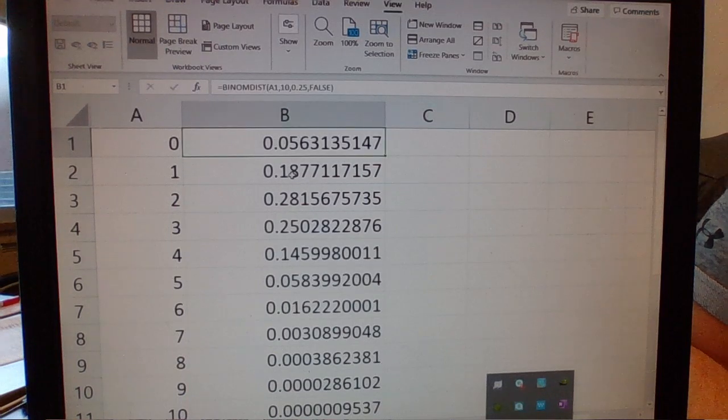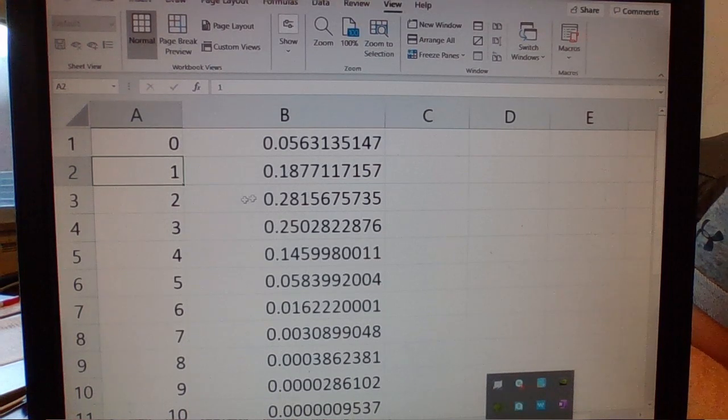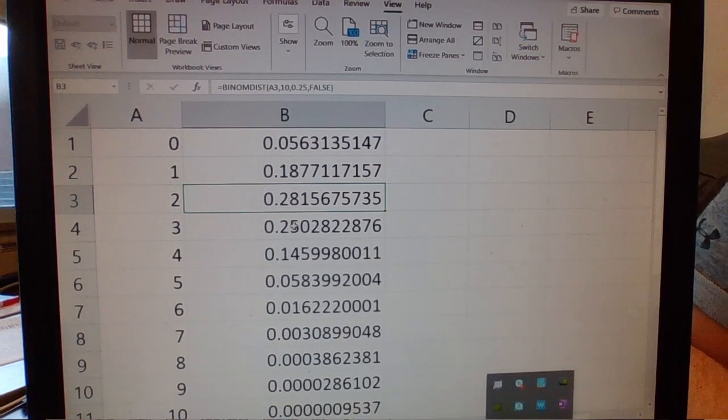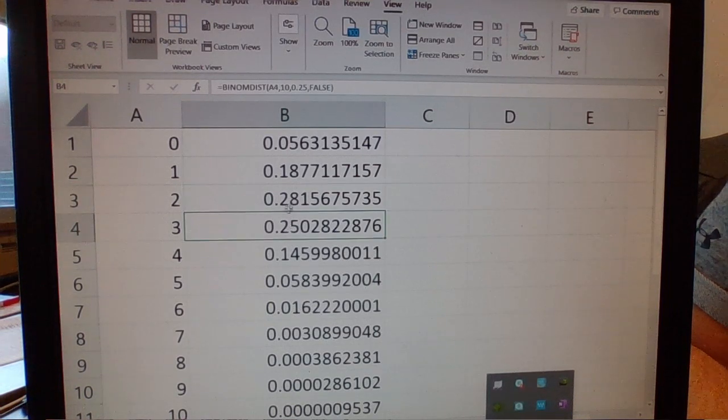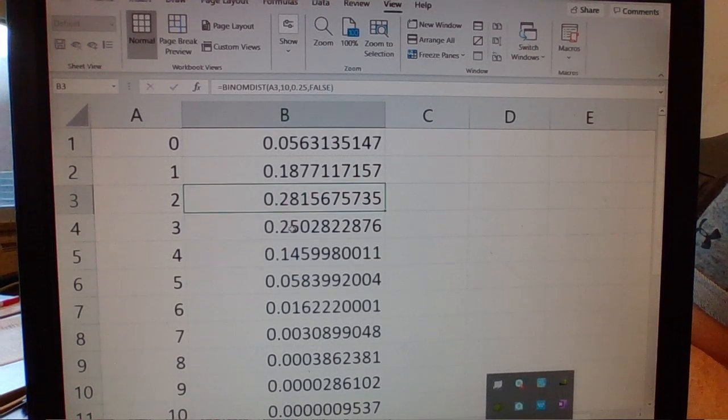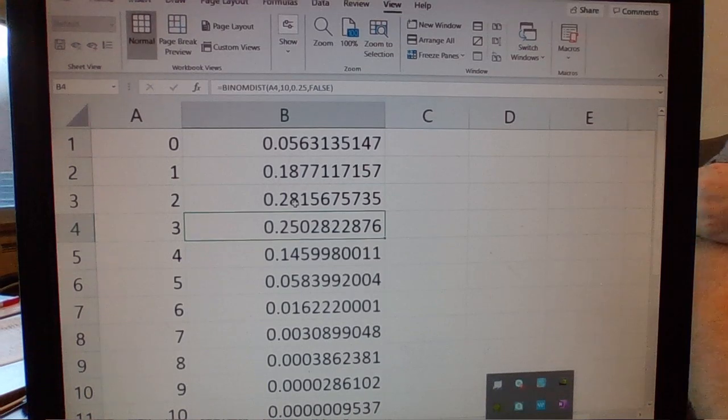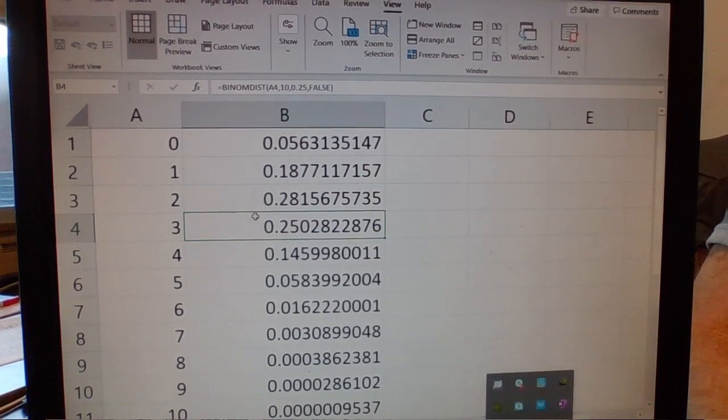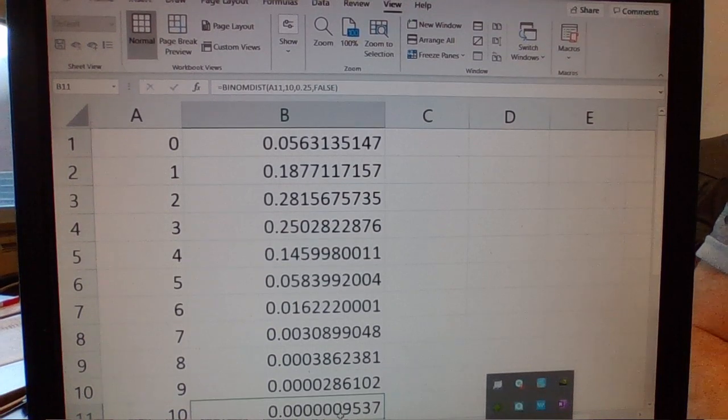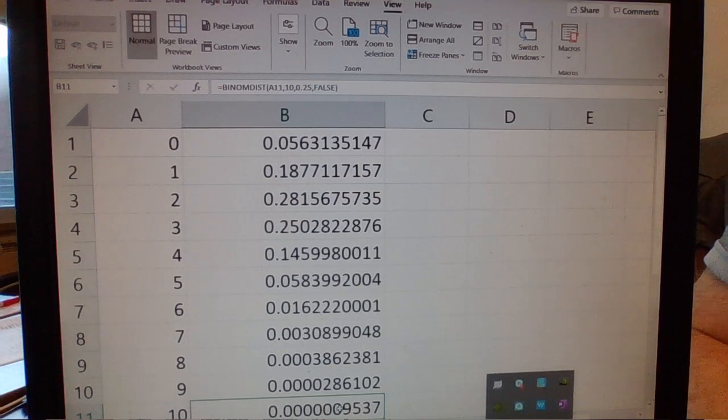So the probability that you get one question right, there's an 18% chance. You get two questions right, there's 28% chance. And if you remember, our mean was 2.5. So hopefully it makes sense to you that if our mean is 2.5, then that's why a bulk of our data is around the mean. There's over 50% of our probabilities here that are going to happen between 2 and 3. Think about this - now move the decimal two places to the right, and that's your percentage for getting 100% on that quiz by just guessing. Pretty rare that that's going to happen.